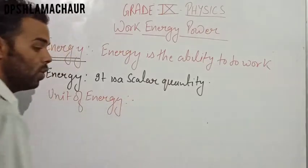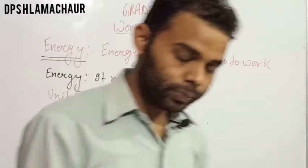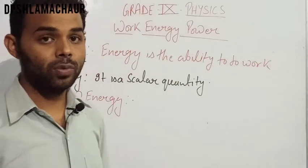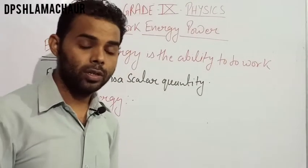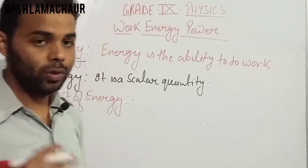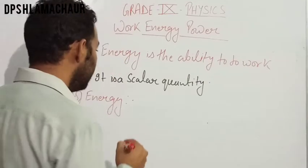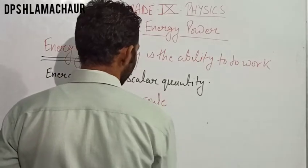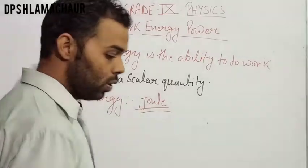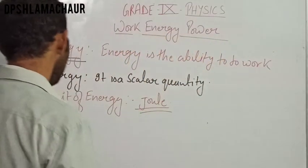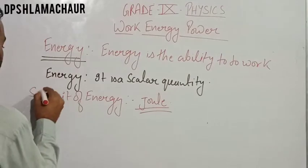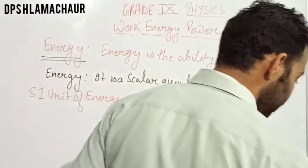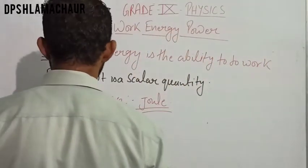Now, what is the unit of energy? Work done is measured in joules, and since work done is equal to energy, similarly the unit of energy will also be joule. The SI unit of energy is joule.